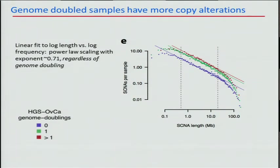Genome doubled tumors have many more somatic copy number alterations. A log-log plot of somatic copy number length versus their frequency shows a straight line fitting a power law model. Interestingly, the slope of the lines for each of the genome doubled groups is very similar, suggesting that somewhat similar mechanisms cover these things, but with more DNA, the rate of generating genome alterations is higher.